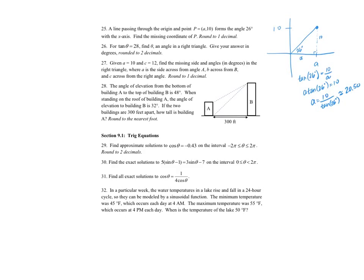Number 26: it says tangent theta equals 28, and I need to find theta as an angle in a right triangle, giving the answer in degrees rounded to two decimals. I'm going to do tangent inverse of 28 in my calculator, and I got 87.95 degrees.